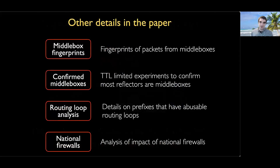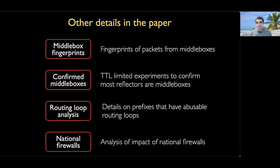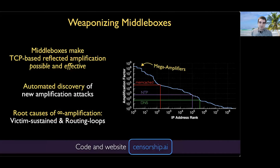There are many other details and results in the paper we don't have time to cover today — fingerprints from packets received from middleboxes, experiments confirming the data is from middleboxes and not weird end hosts, detailed analysis of routing loops, and analysis of the impact of national firewalls. In summary, we presented new TCP-based amplification attacks enabled by middleboxes that are all over the world, and we found ways to automatically discover how to launch these attacks. For more, please see our website at censorship.ai. Thank you.